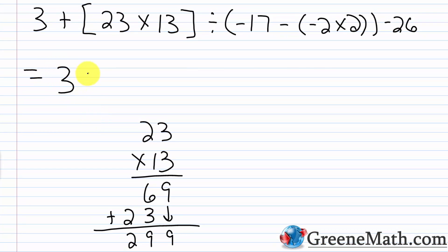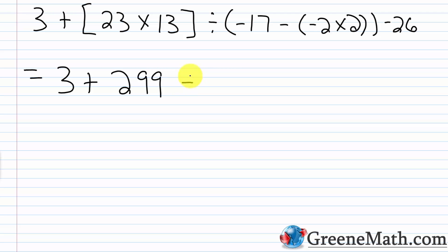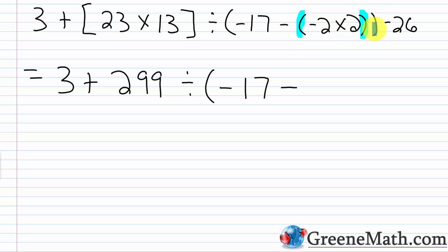So we're going to have 3 plus 299. Then we're dividing by, inside of the parentheses, negative 17 minus. Once I get inside of these parentheses, I would go to this inner set of parentheses and evaluate negative 2 times 2. Negative 2 times 2 is negative 4 — negative times positive is negative, and 2 times 2 is 4. So this would be minus a negative 4. And then we have minus 26.